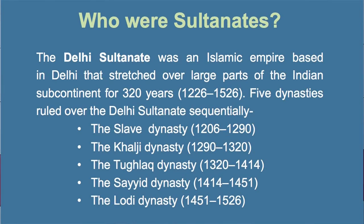The Delhi Sultanate was an Islamic empire based in Delhi that stretched over a large part of the Indian subcontinent for 320 years, that is from 1226 to 1526. Five dynasties ruled over the Delhi Sultanate: the Slave dynasty, the Khilji dynasty, the Tughlaq dynasty, the Sayyid dynasty, and the Lodi dynasty.